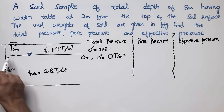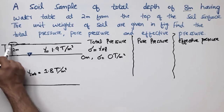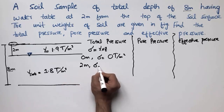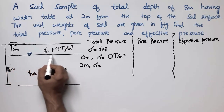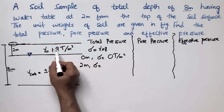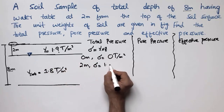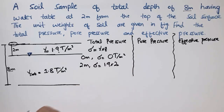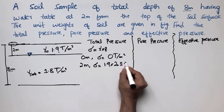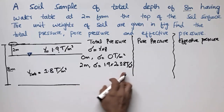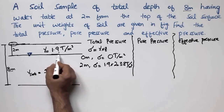At the point 2 meters from the top of the surface, Z equals 2 meters and gamma is 1.9 ton per cubic meter. So 1.9 multiplied by 2 gives a total pressure of 3.8 ton per square meter at the 2-meter depth.